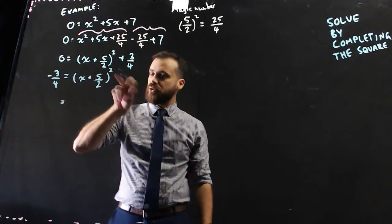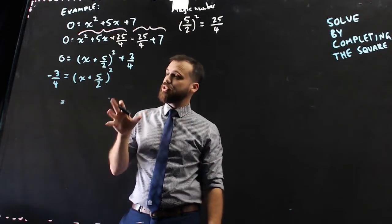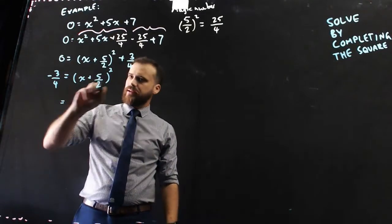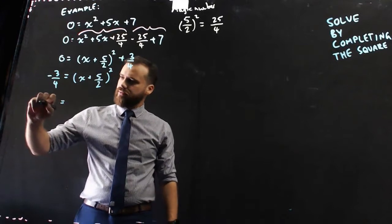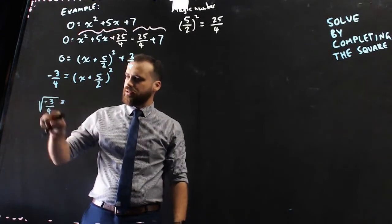Now, we need to take the square root of this. Now, I've caused myself an issue here, but don't panic. Now, if we take the square root of that, it's going to look like this.